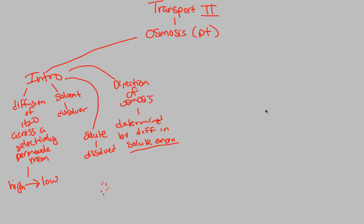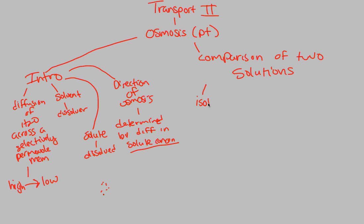Now we're going to talk about the comparison of two solutions, which is a big part of osmosis and biology. There are three outcomes that can occur: an isotonic solution, a hypertonic solution, and a hypotonic solution. Two solutions can be isotonic to each other, one can be hypertonic to the other, or one can be hypotonic to the other.